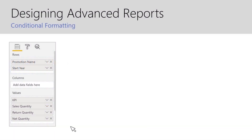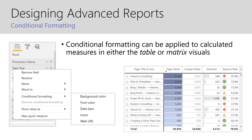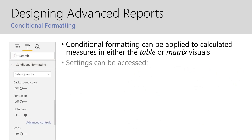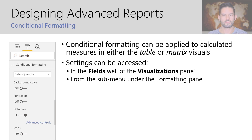Diving into the first topic of conversation, let's talk about the availability of conditional formatting. Conditional formatting was originally added to Power BI as an option to apply to calculated measures inside of either table or matrix visuals. There are two places where you can add conditional formatting: the first is in the fields well of the visualizations pane, as shown by the animation on the left, and you can also add it from the sub-menu under the formatting pane, as shown by the image on the left.